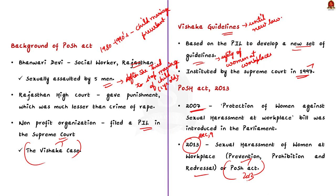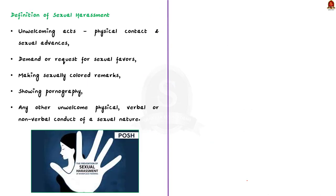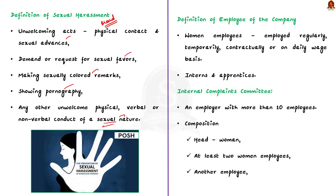The POSH Act 2013 defines sexual harassment in a broader sense. It includes unwelcoming acts such as physical contact and sexual advances, a demand or request for sexual favours, making sexually coloured remarks, showing pornography, and any other unwelcome physical, verbal or non-verbal conduct of a sexual nature. As per the POSH Act 2013, the term 'employee' includes all women employees who are employed regularly, temporarily, contractually or on daily wage basis — it even includes interns and apprentices in the company.